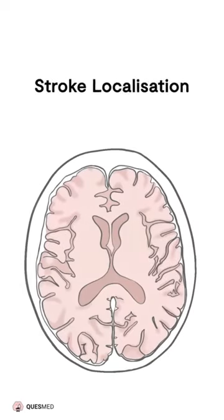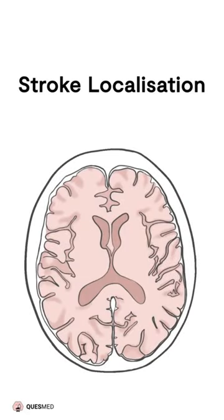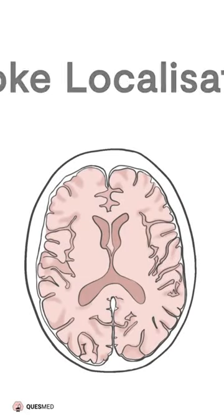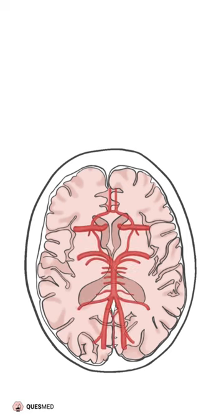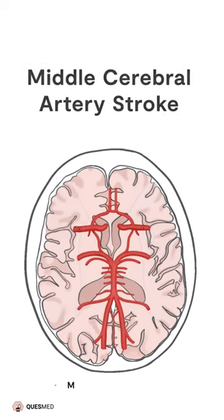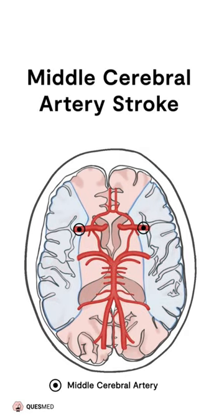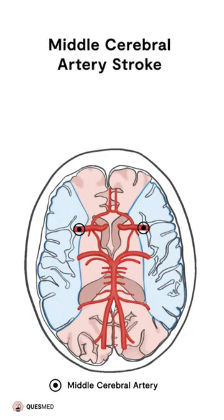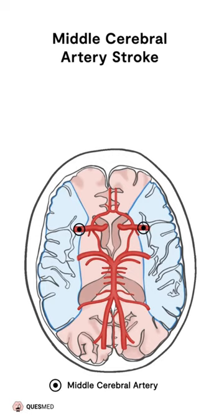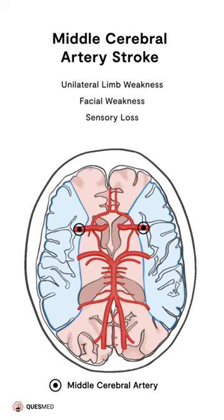Everything you need to know about stroke localization in under one minute. The most common type of stroke is a middle cerebral artery stroke. This typically causes unilateral limb or facial weakness or sensory loss on the contralateral side of the occlusion.